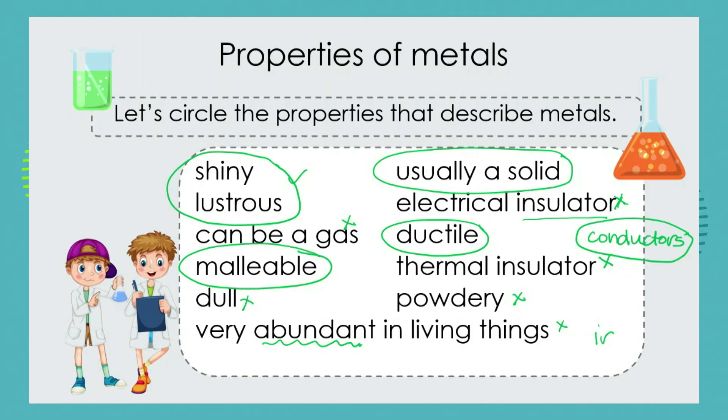We do rely on certain metals. For example, iron is found in your blood. In every little red blood cell you have iron atoms, and those iron atoms work very hard carrying your oxygen around your body. But you are not a chunk of iron. So whilst we do have metals in our bodies, they're not very abundant — we need them in tiny, tiny amounts.